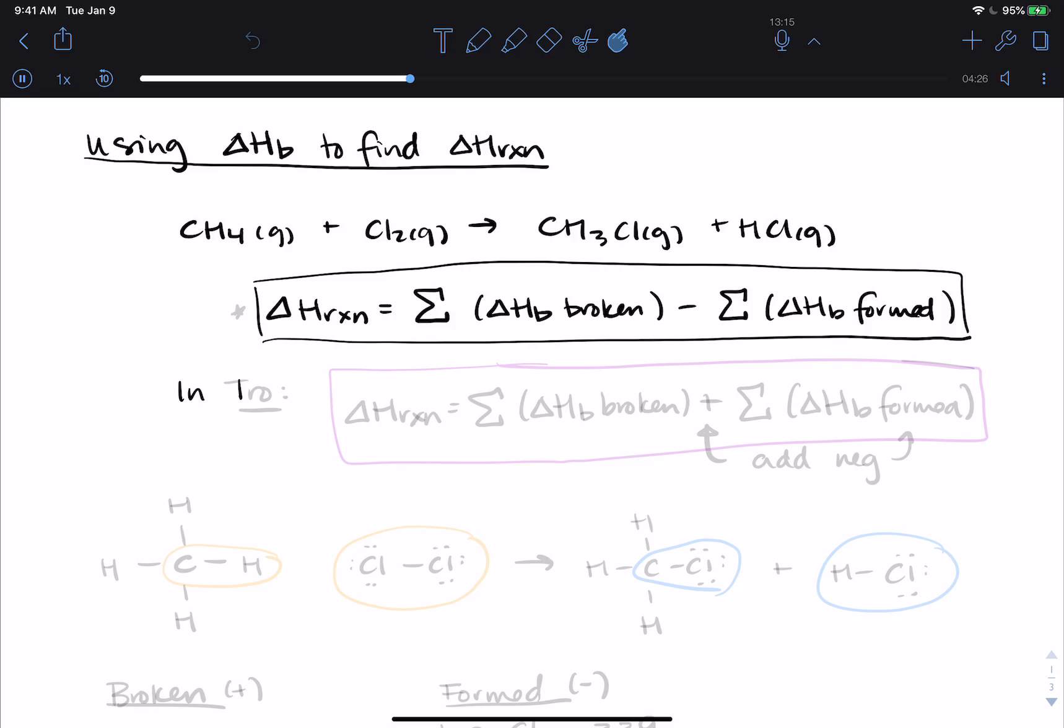If you are looking in a textbook like Tro, which may either be the assigned textbook or one of the recommended reference textbooks, they did something really silly, and they said ΔH reaction equals ΔHb broken plus, I'm like, oh no, why did you do this, sum of ΔHb formed. So in Tro, because of the plus sign, you have to add negative signs to everything that was formed. We're going to do this in an example right now. The whole thing is recognizing you put in energy to break a bond, you get back energy when you form a bond.